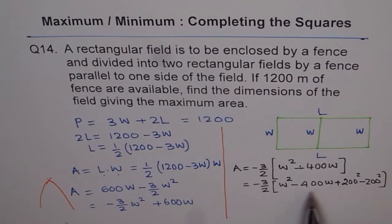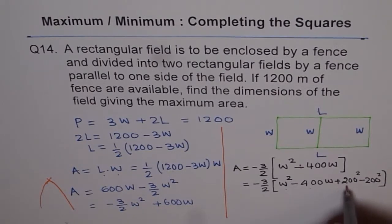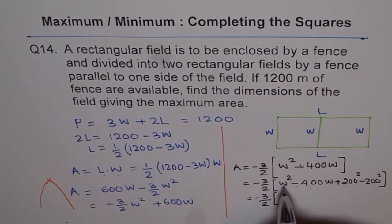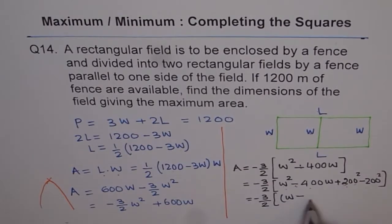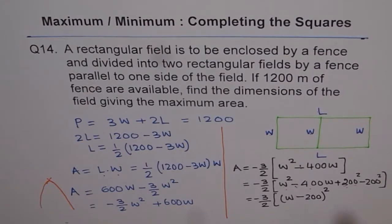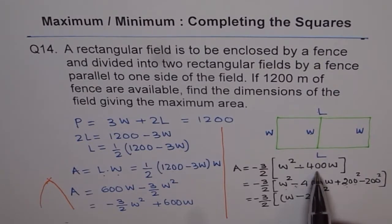But what does it do? It makes the first 3 terms as a perfect square and be written as, you can always write this as W minus 200 whole square. Do you understand? So that was the idea. That is why we did half of the center term, I mean half of the coefficient of W, squared it and added and subtracted it.